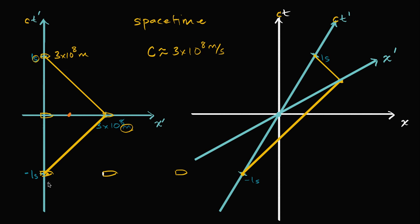This over here is negative. So that over there is negative 3 times 10 to the eighth meters. Along the CT prime axis. Likewise, this, what we called 1 second right over here, instead, we can call this as 3 times 10 to the eighth meters. This, we could call negative 3 times 10 to the eighth meters.